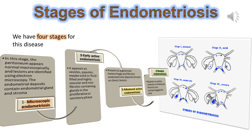There are 4 stages of endometriosis. Stage 1: Microscopic endometriosis. In this stage, the peritoneum appears normal macroscopically, and lesions are identified using an electron microscope. The endometrial deposits contain endometrial gland and stroma.